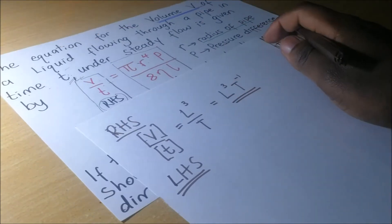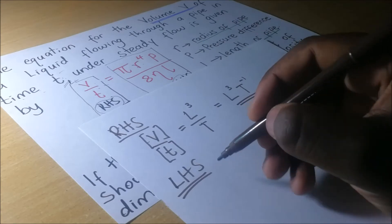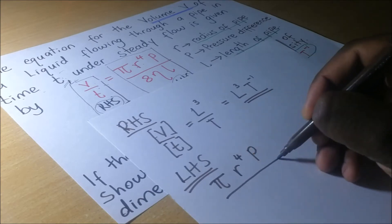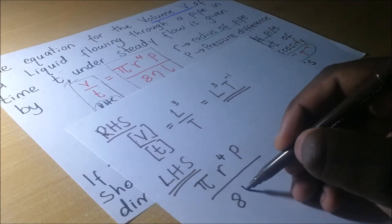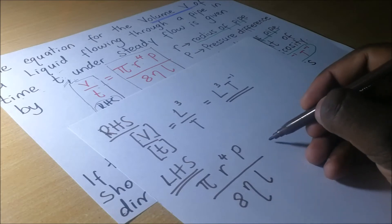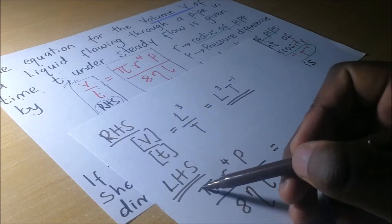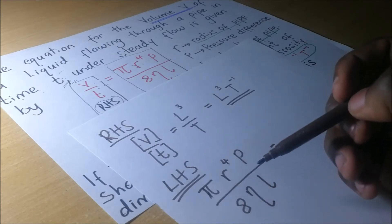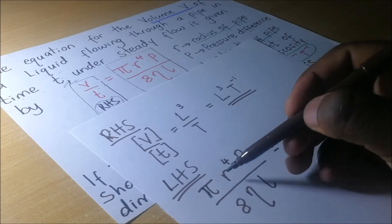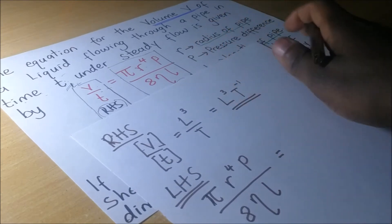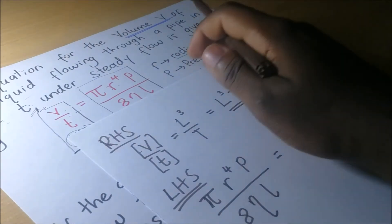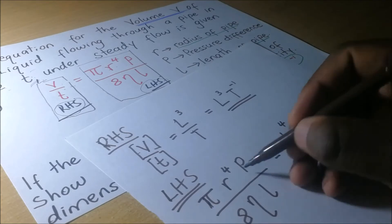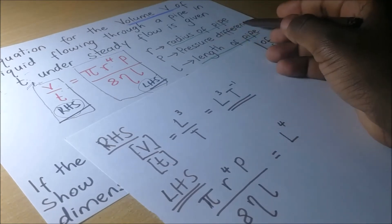Looking at the left-hand side of the equation, we have this expression here. The left-hand side has pi R to the power 4 times P, divided by 8 eta and L. Pi is a constant, and we know that constants are dimensionless, so pi does not have a dimension. R is the radius of the pipe, so it means that this is L. So it's going to become L to the power 4 times P. P is pressure difference.